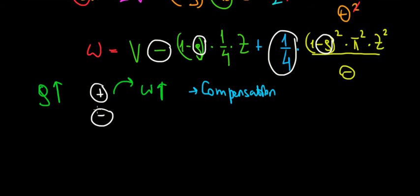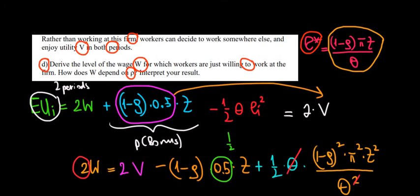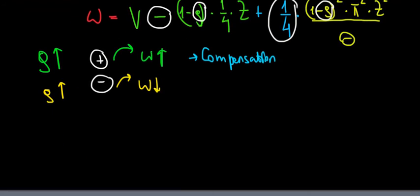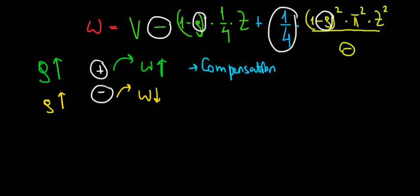On the other side, why would the wage decrease if the probability of the outsider getting the job increases? That happens because of the effort effect. If rho goes up, this term goes down, meaning the effort level goes down. If the probability of the outsider getting the job goes up, we would put in less effort — because it's not worth putting in much effort for a bonus that will most likely go to someone else. If we put in less effort, we produce less output, we deserve less money, and that's why the company would pay us less.